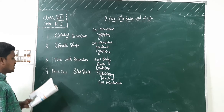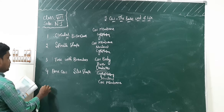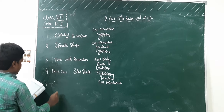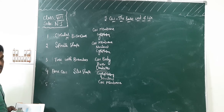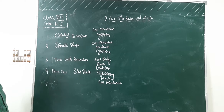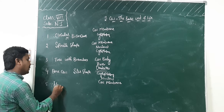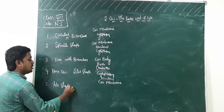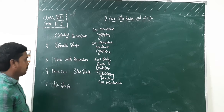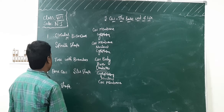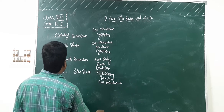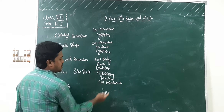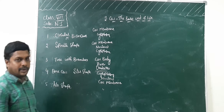Last cell: WBC — White Blood Cell. Write it down. They have no particular shape. Parts are the same: cytoplasm, nucleus, and cell membrane.